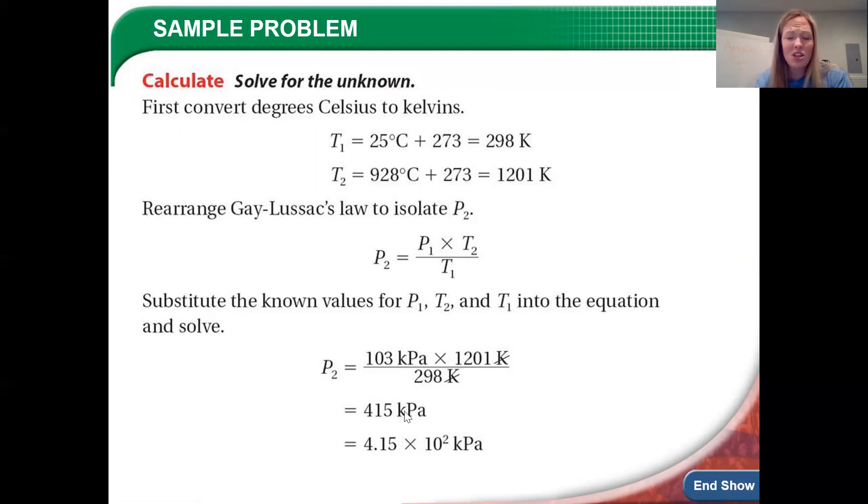Now that right there is good for sig figs, 415 kPa. You could put it in scientific notation like they did here, but it's absolutely not necessary. You could leave it in standard notation. So there's an example of Gay-Lussac's law or Amonton's law, depending on apparently who's referencing. So maybe this week's Friday fact could be about the reason why there's two different names for the same gas law.